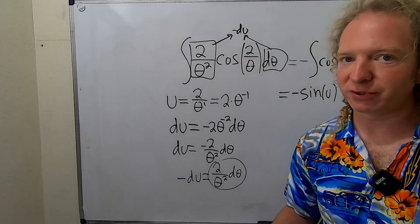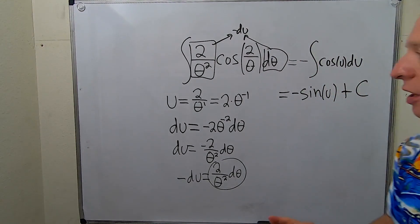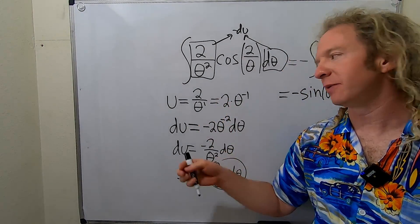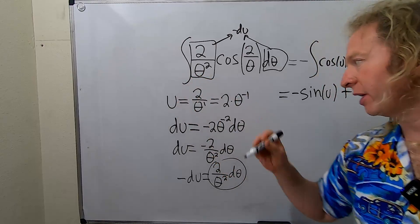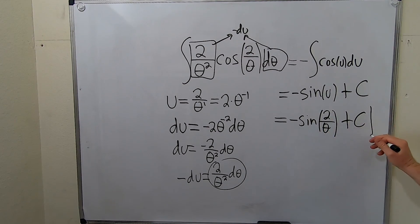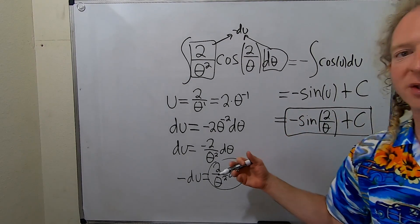which is our constant of integration. We're almost done. The last thing to do is replace u with what it actually is, u equals 2 over theta. So this is equal to negative sine of 2 over theta plus our constant of integration, capital C. And that would be the final answer.